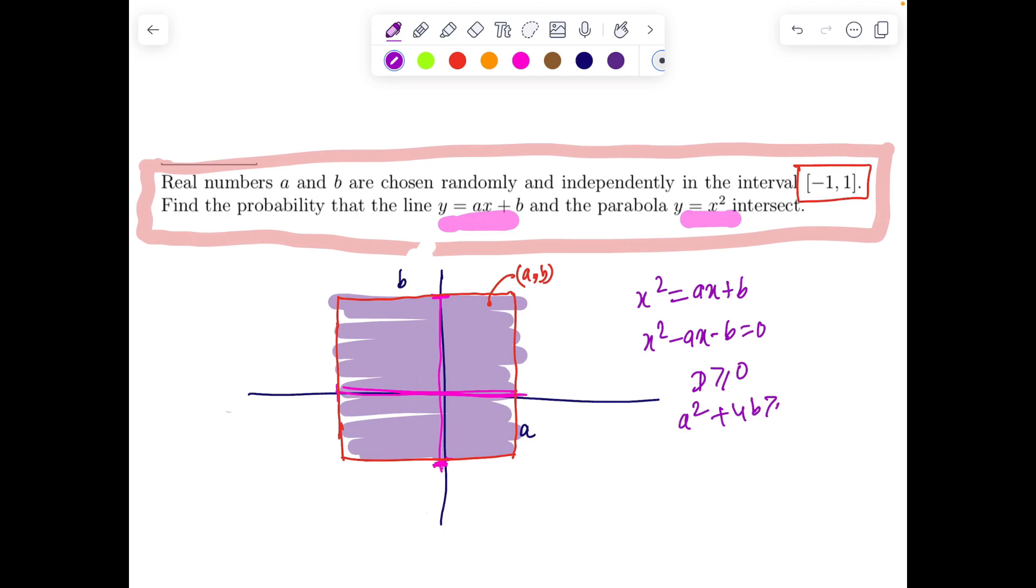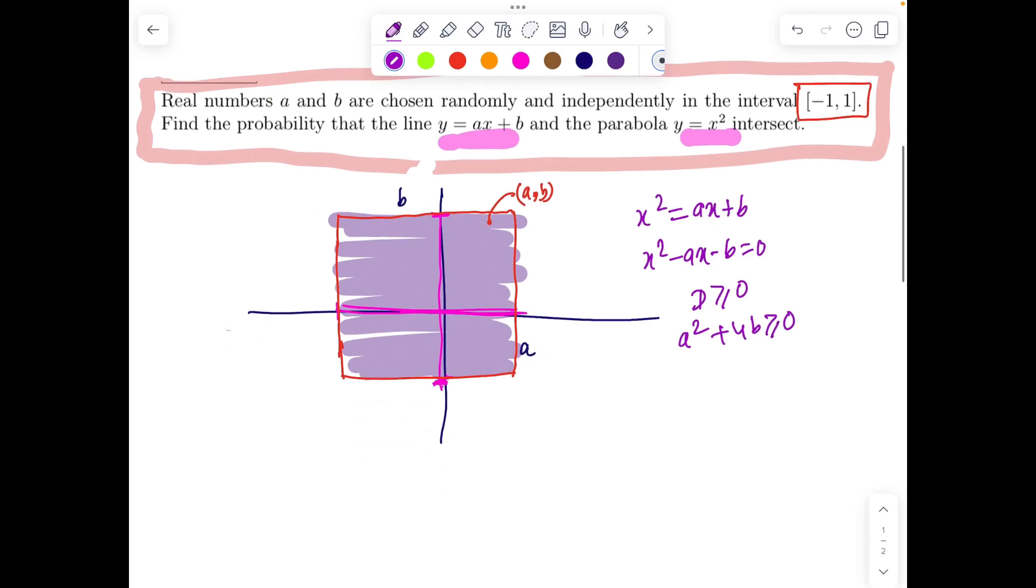So discriminant Δ ≥ 0. So a² + 4b should be greater than or equal to 0, which gives 4b ≥ -a², and translates to b ≥ -a²/4.